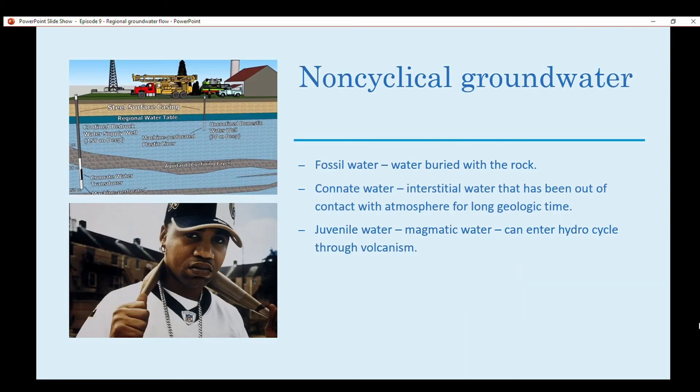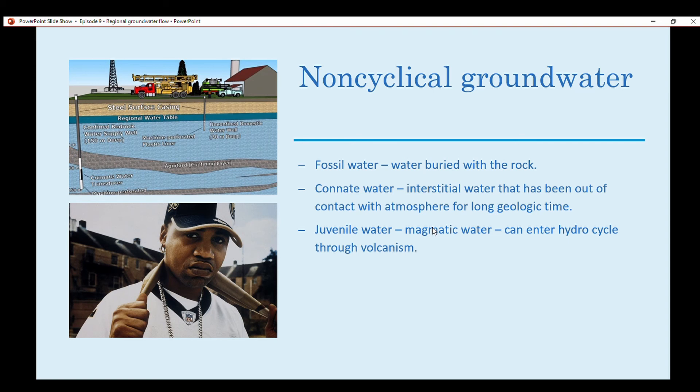In terms of non-cyclical groundwater, you have fossil water, which is water buried with the rock. You have connate water, which is something you hear about when dealing with petroleum geology. That's water that they typically come in contact with when drilling for oil - it's interstitial water that has been out of contact with the atmosphere for a long geologic time. In terms of juvenile water, we're talking about magmatic water, and it enters the hydro cycle through volcanism. It's coming from deep in the crust, basically deep in the lithosphere, from intruding magma bodies.